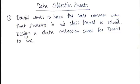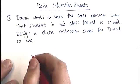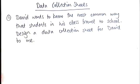The first question says: David wants to know the most common way that students in his class travel to school. Design a data collection sheet for David to use. David is going to be standing there with his clipboard wanting to ask people how they travel to school. Does he need to know anything else about them — their name? No, because he just wants to know the most common thing. He only wants one item of data from each person: their mode of transport.